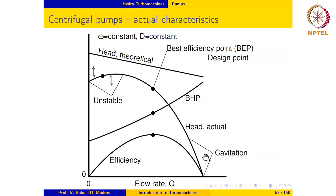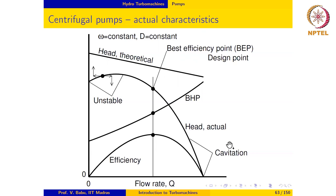These droplets are then carried into the impeller where, as the pressure increases, the droplets collapse. The collapsing droplets can result in instantaneous pulses of very high pressure. If this collapse occurs in the vicinity of blade surfaces, it can cause a lot of pitting damage to the blade surface and also cause instability in the operation of the pump. So cavitation is highly undesirable and must be avoided at all costs.